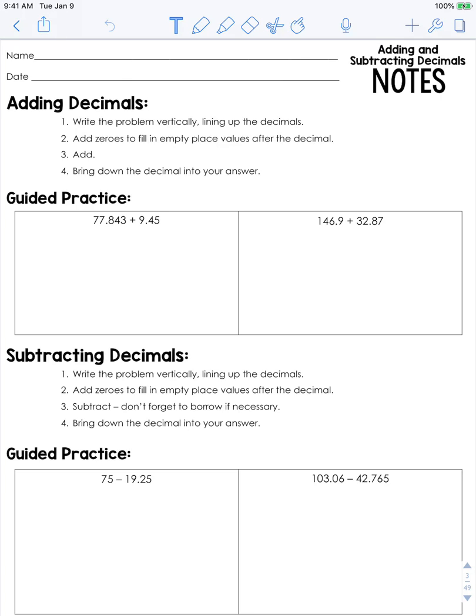Let's add and subtract decimals. When you're adding decimals, you're going to write the problem vertically, lining up the decimals. Then you're going to add zeros to fill in any empty place values after the decimal. Then you're going to add and then bring down the decimal into your answer.